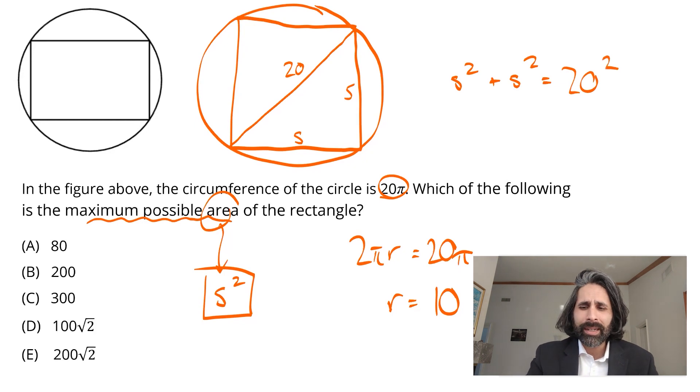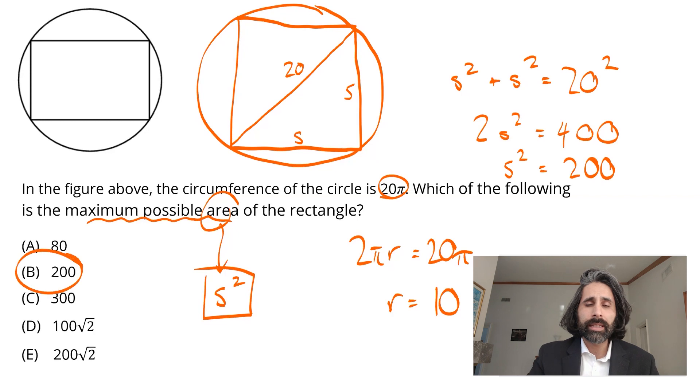Do a little bit of squaring and combining and whatnot. You'll get 2s squared equals 400. Divide both sides by 2, and you're left with exactly what we're looking for. s squared, the area, equaling 200. Boom. Answer.